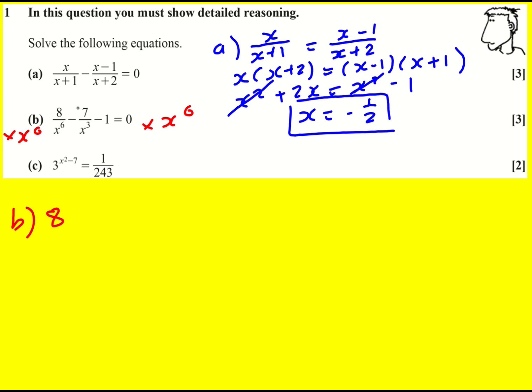Therefore the first term becomes 8 because they just cancel out. The second term, the x to the 6 and x to the 3 partially cancelled leaving us x to the 3.